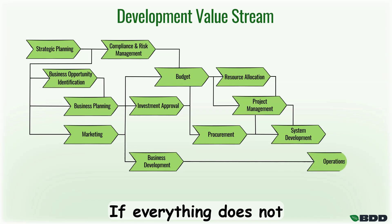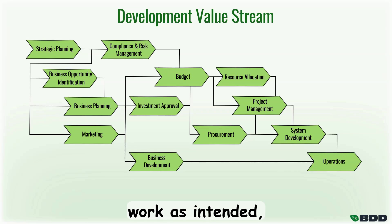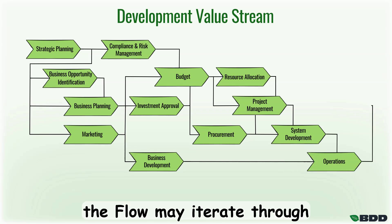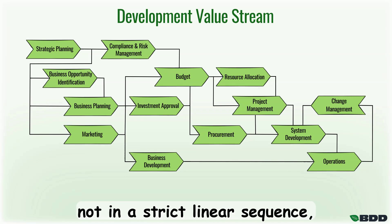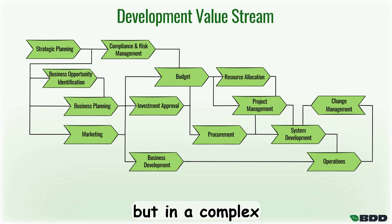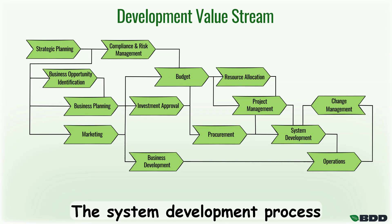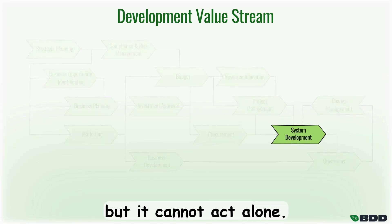If everything does not work as intended, the flow may iterate through change management. Many units and their processes are involved, not in a strict linear sequence but in a complex value stream network. The system development process may be central, but it cannot act alone.